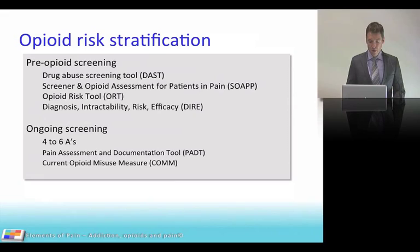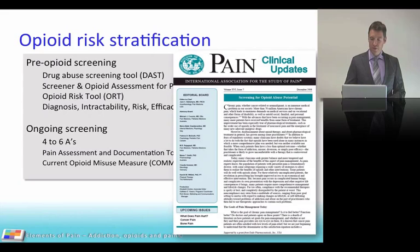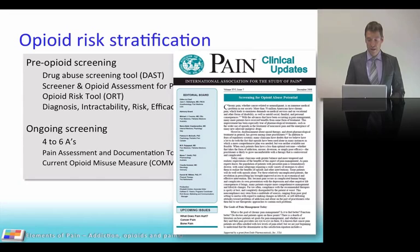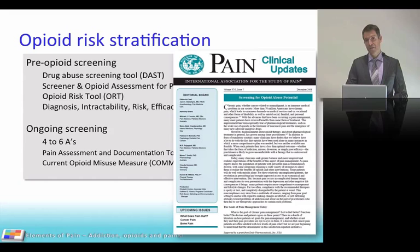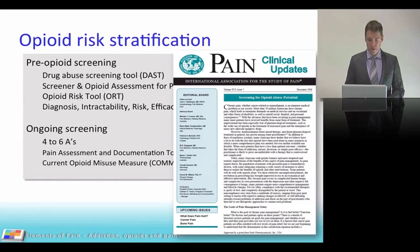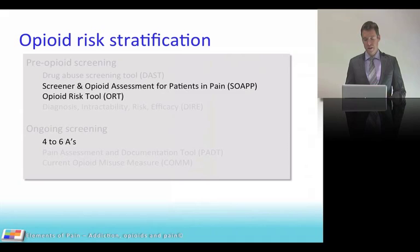Opioid risk stratification is a great exam question. The IASP Clinical Updates provide useful reading on this. Stratification involves pre-opioid screening before starting opioids, and ongoing screening to monitor patients already on opioids. Two useful pre-opioid screeners are the Screener and Opioid Assessment for Patients in Pain (SOAP) and the Opioid Risk Tool (ORT).